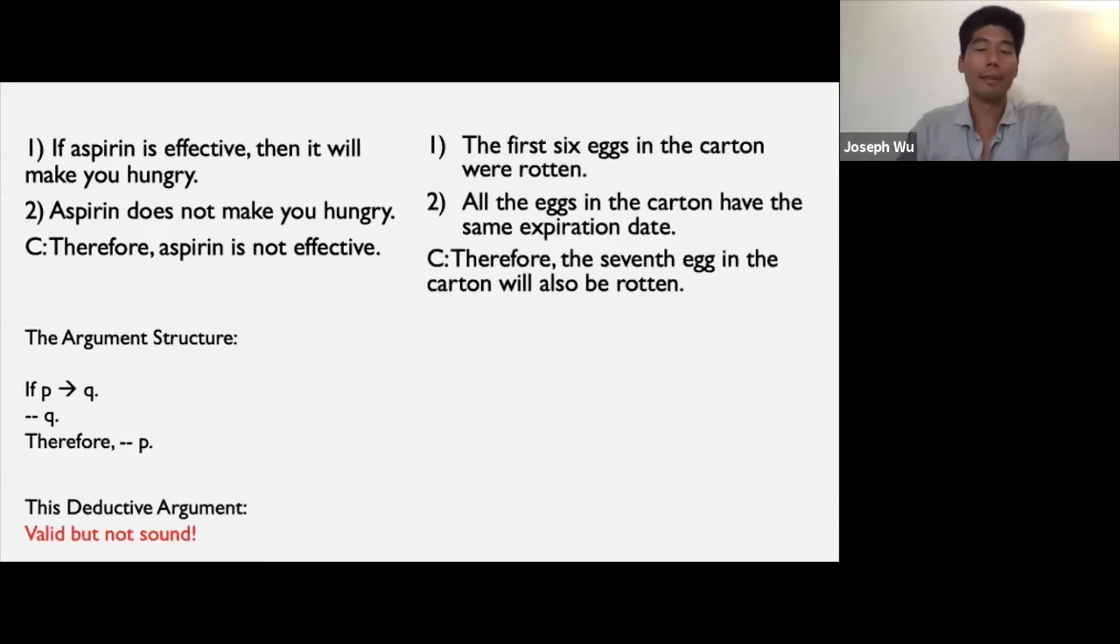Now here's a slightly different argument. Premise 1: the first six eggs in the carton were rotten. Premise 2: all the eggs in the carton have the same expiration date. Therefore, the seventh egg in the carton will also be rotten. Should we accept this conclusion?